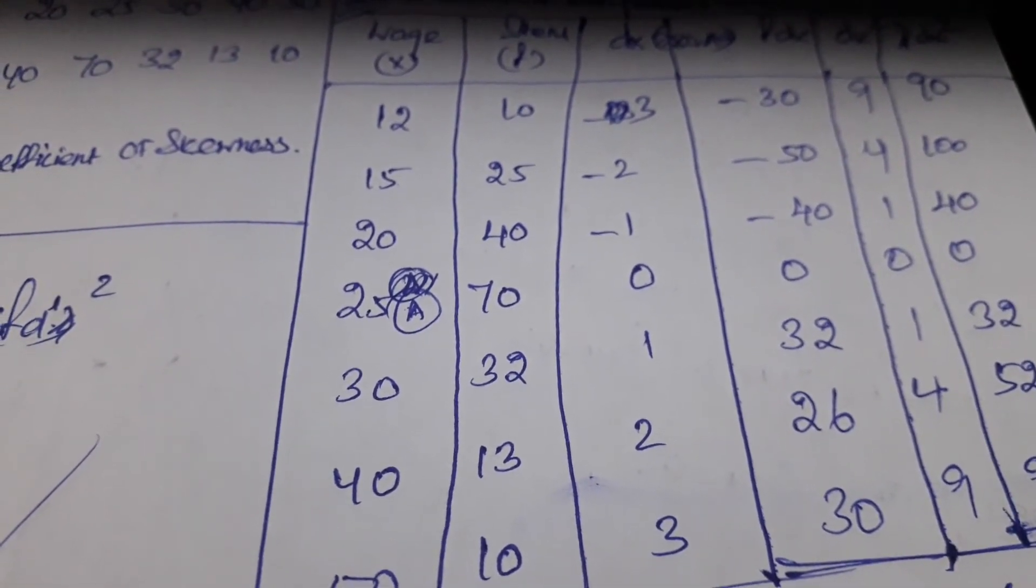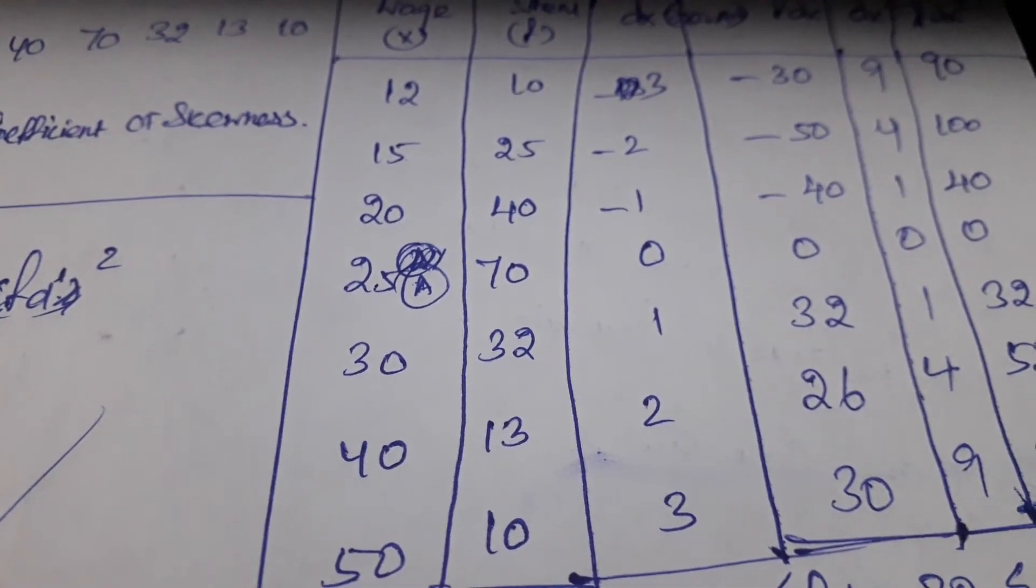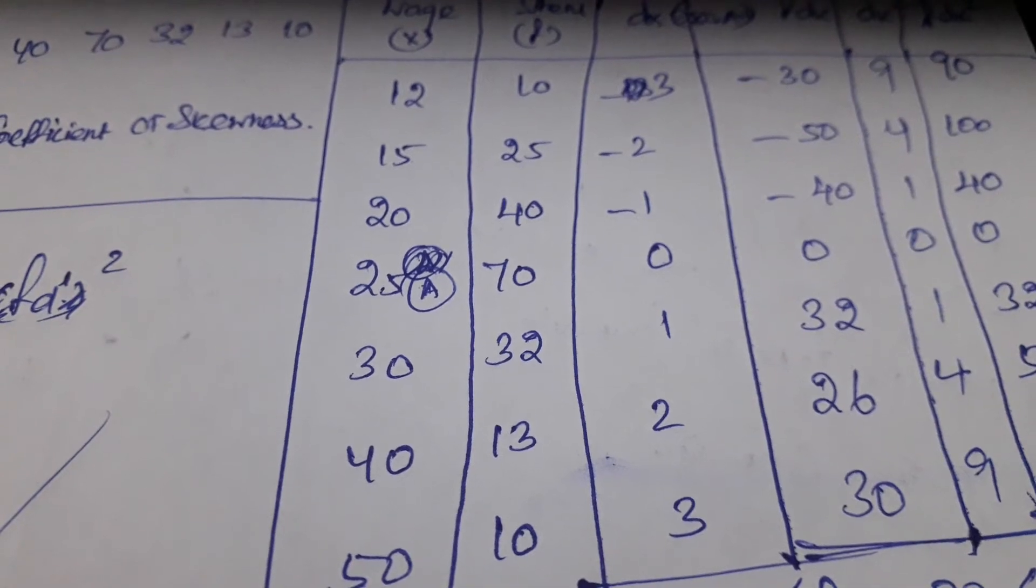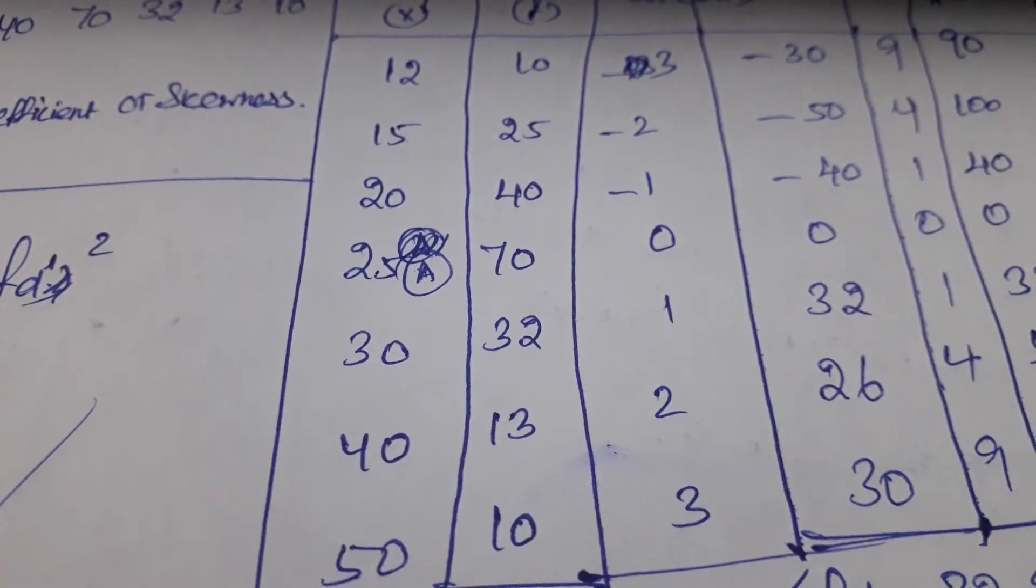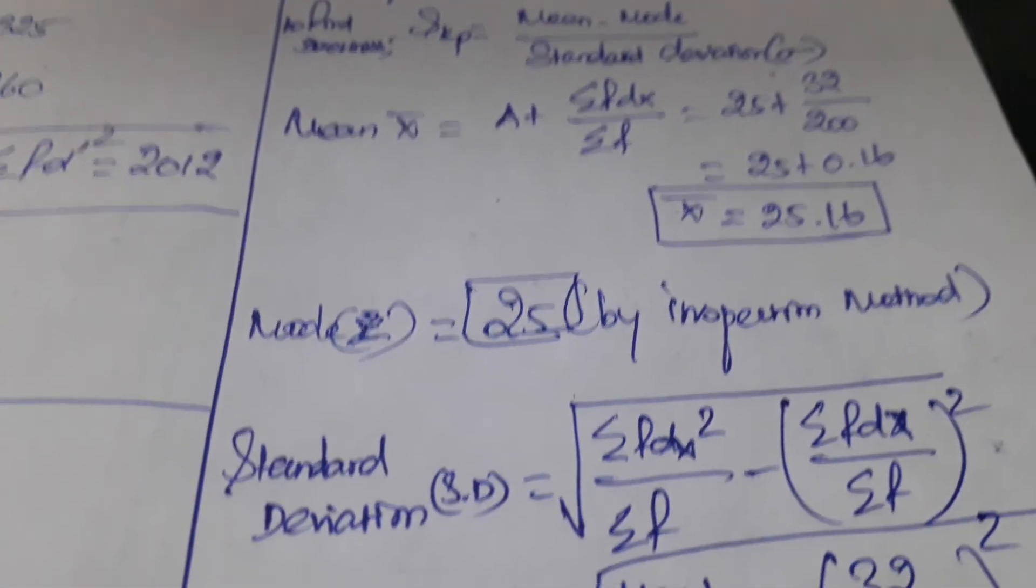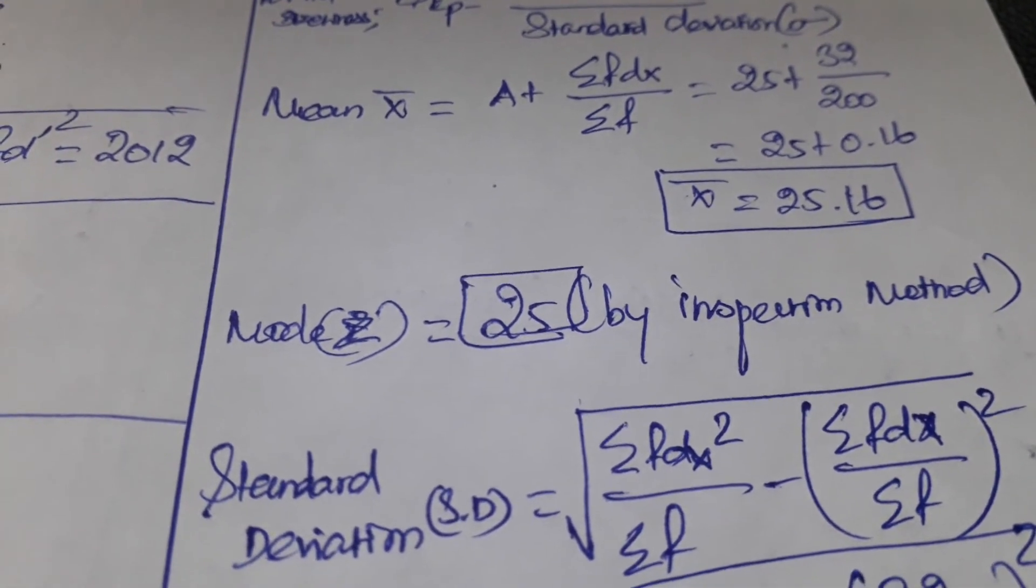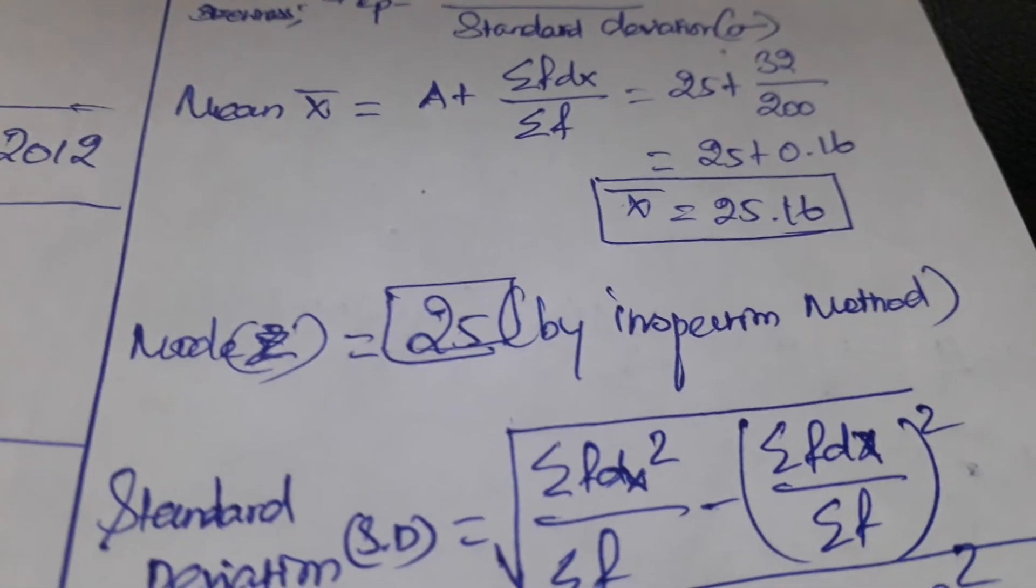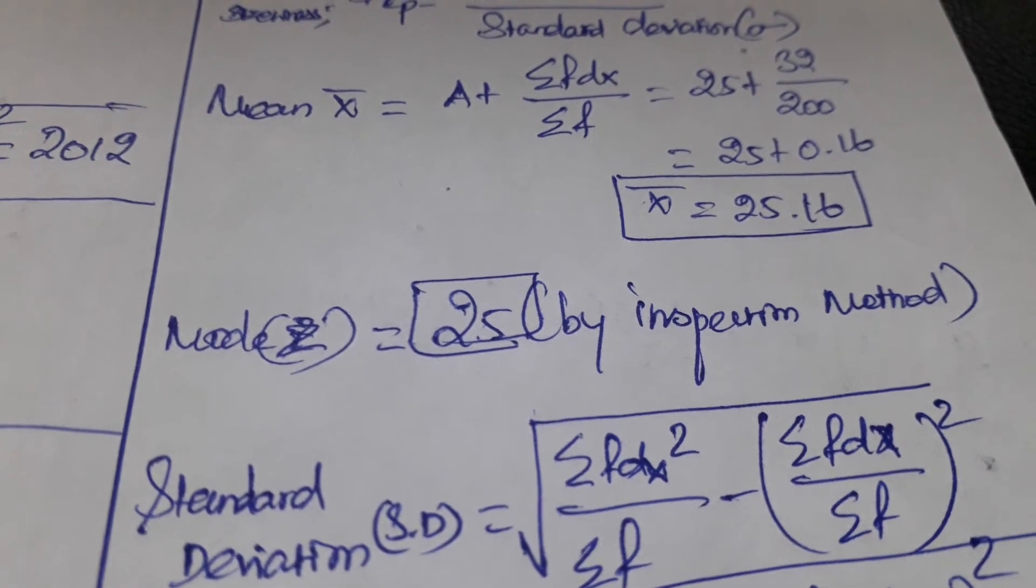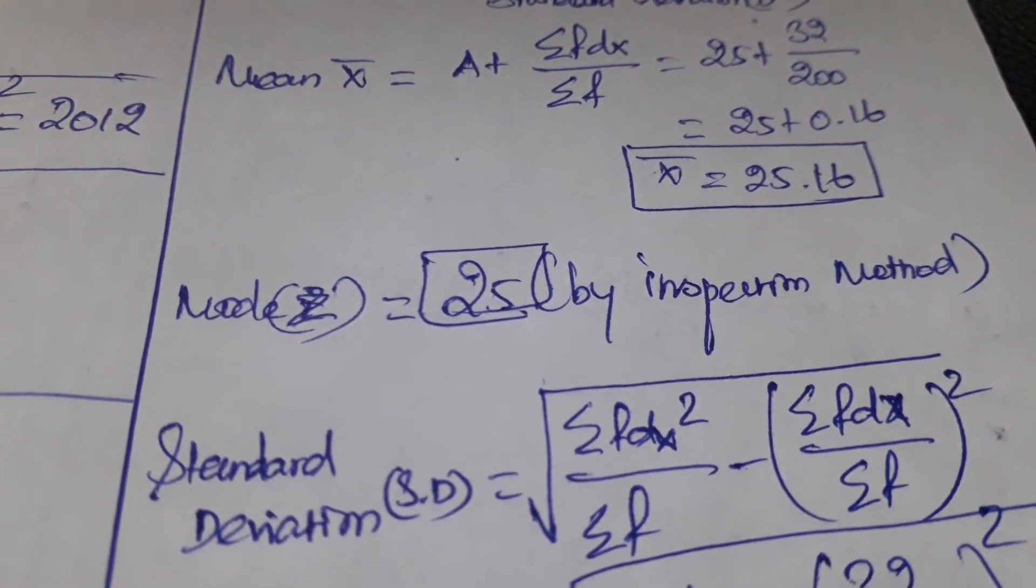In this table, 70 is the highest value. So the horizontal value of this 70 is 25. That is the mode. We have looked at the highest value of the frequency through which we have to find out the mode.